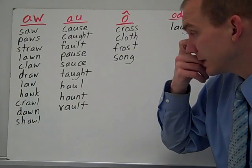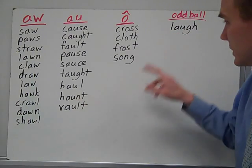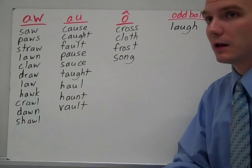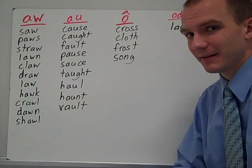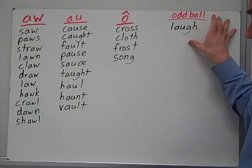And there's one example of a word that has the au, but is pronounced laugh. Not lof, laugh. You have a short a sound in that. So that doesn't really fit, but the spelling's there. And it's a word you should know how to spell.